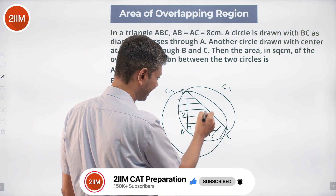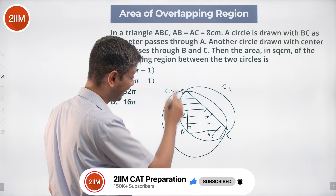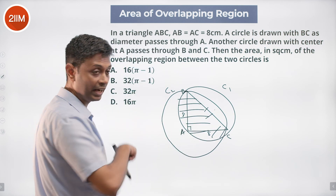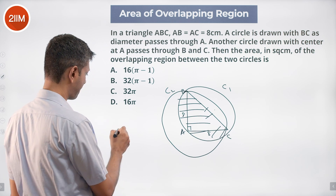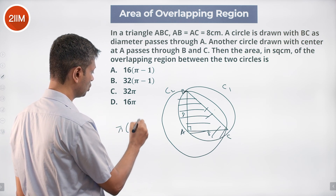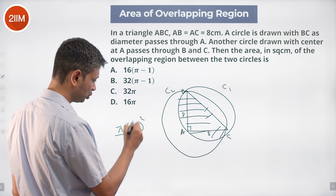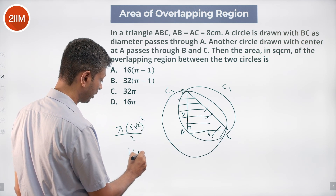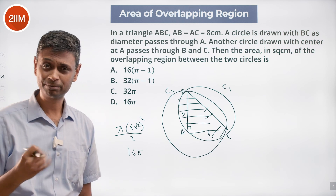This semicircle has a diameter of 8√2, so the radius is 4√2. The area is π(4√2)² divided by 2, which gives 16 × 2 divided by 2, equals 16π. So 16π is already accounted for.